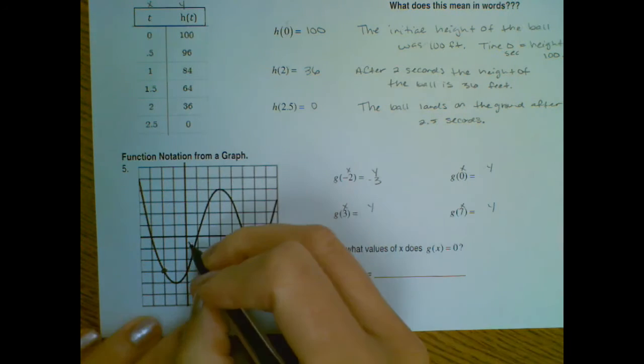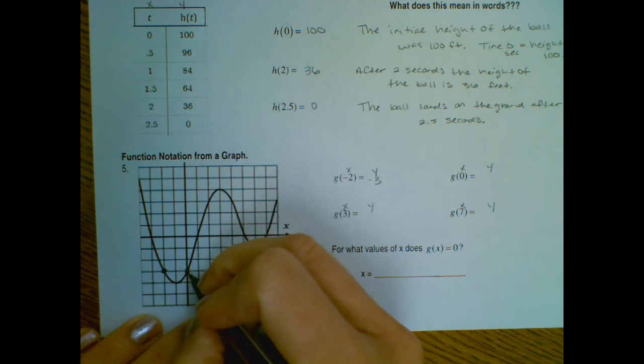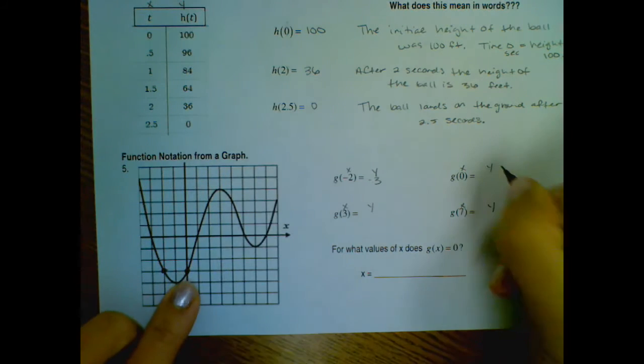At g of 0, that's when x is 0, looks like y crosses at negative 3 as well.